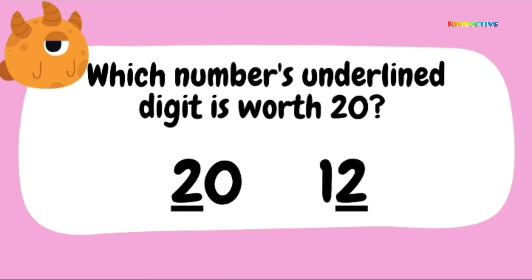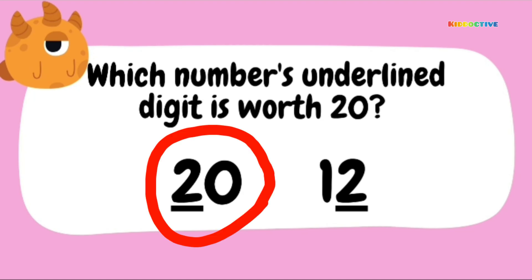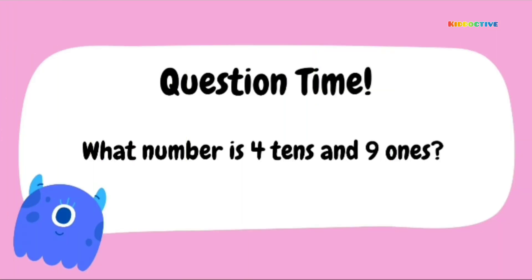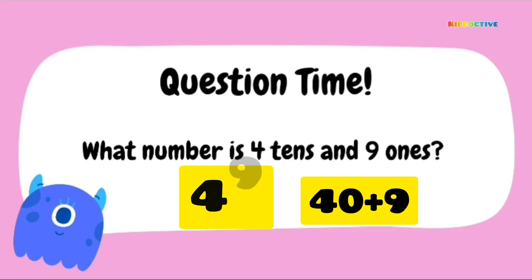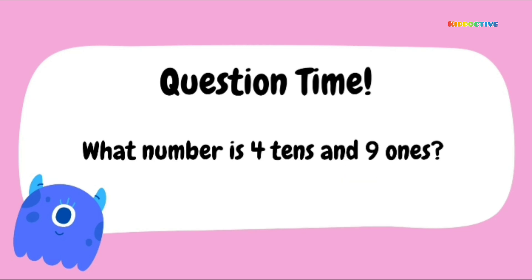Which underlined digit is worth 20? There are two numbers, 20 and 12. In 20, the 2 is in the 10's place, so its worth is 20. Now another question: what number is 4 tens and 9 ones? 4 tens means 40, plus 9 ones means 9. So the answer is 49.